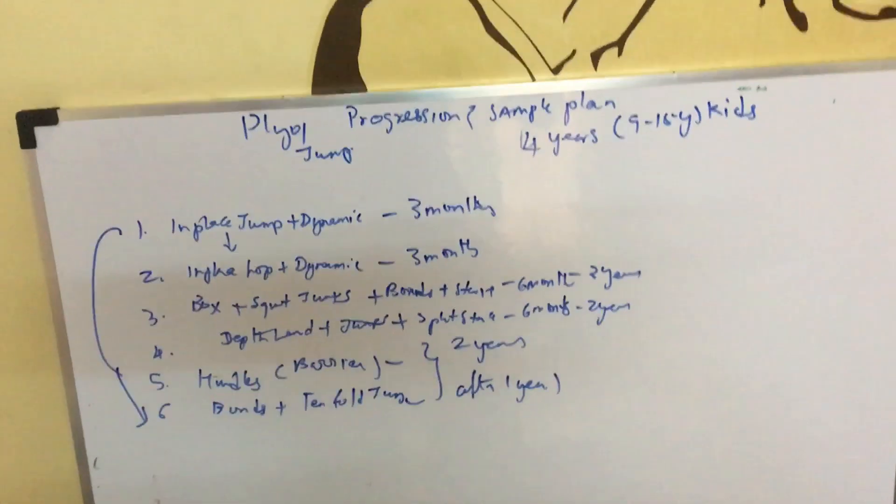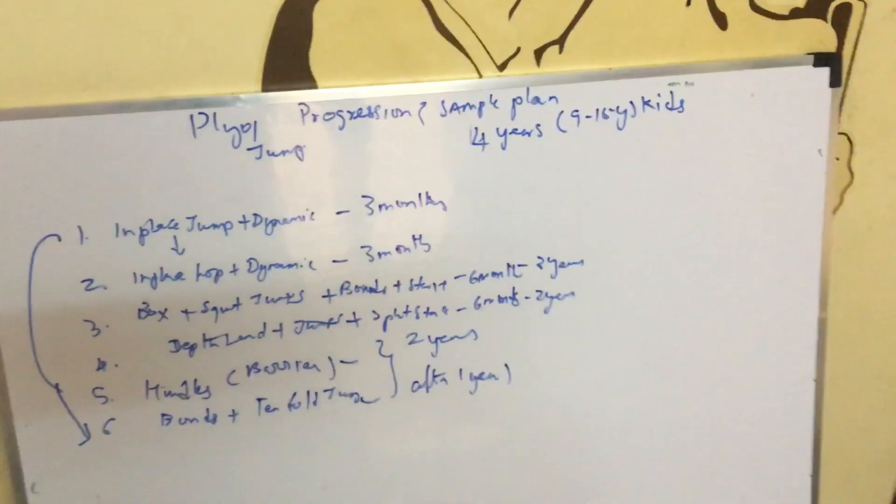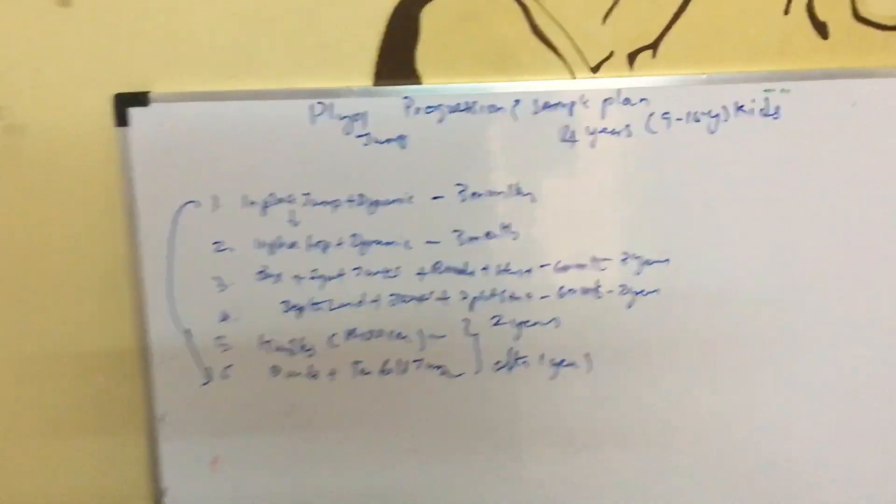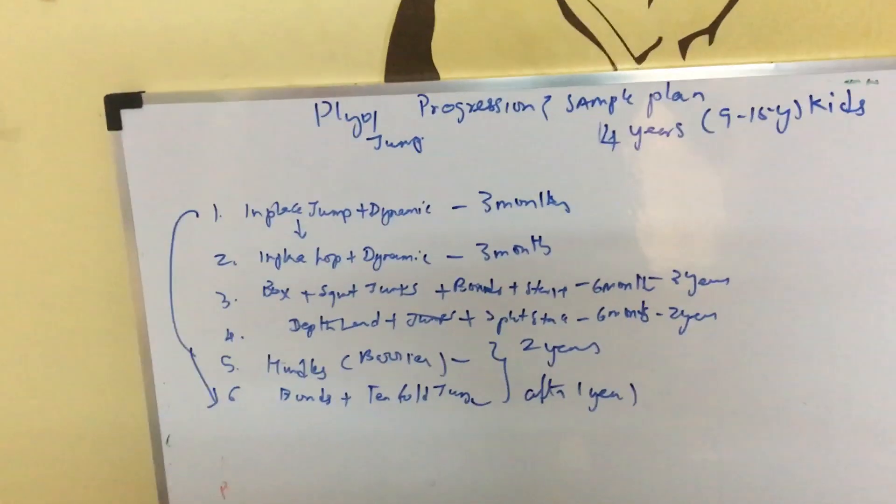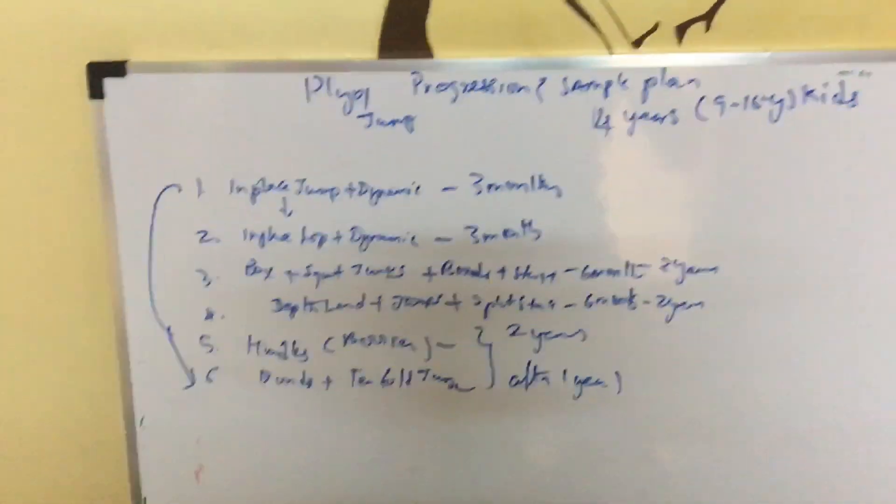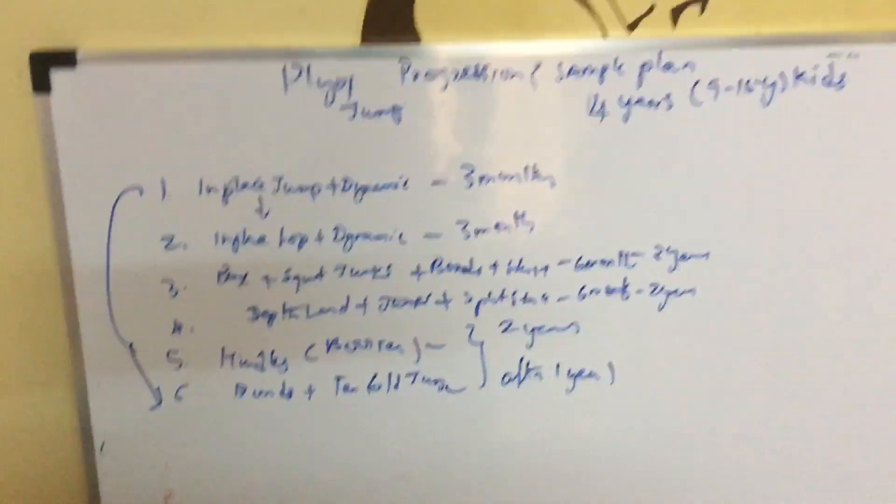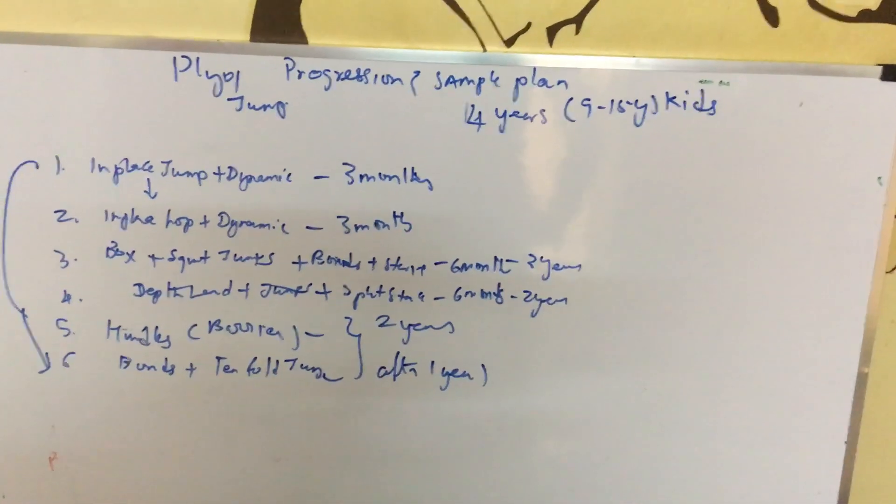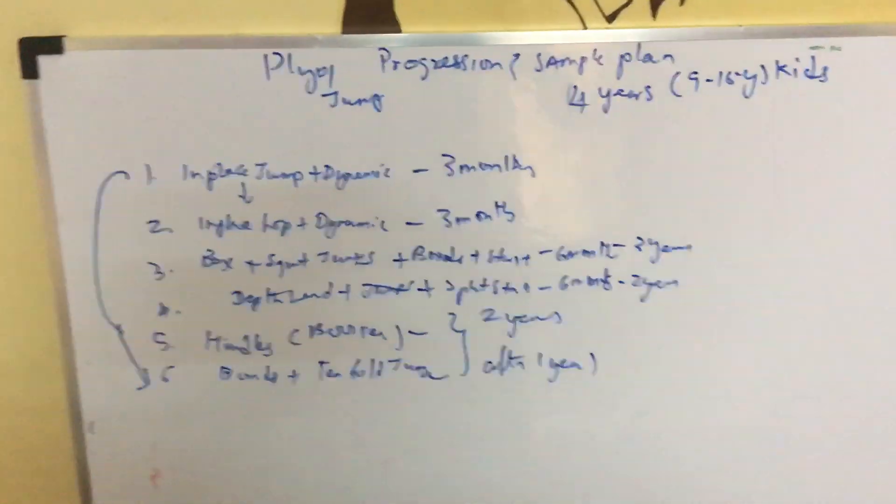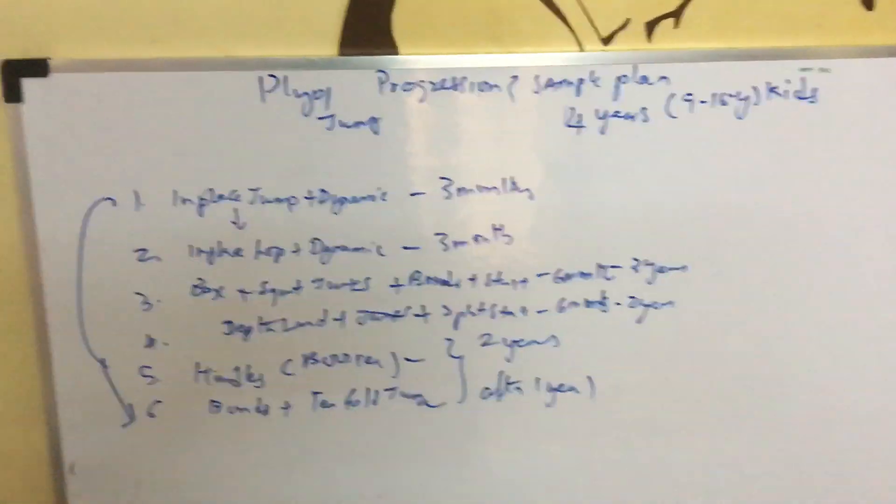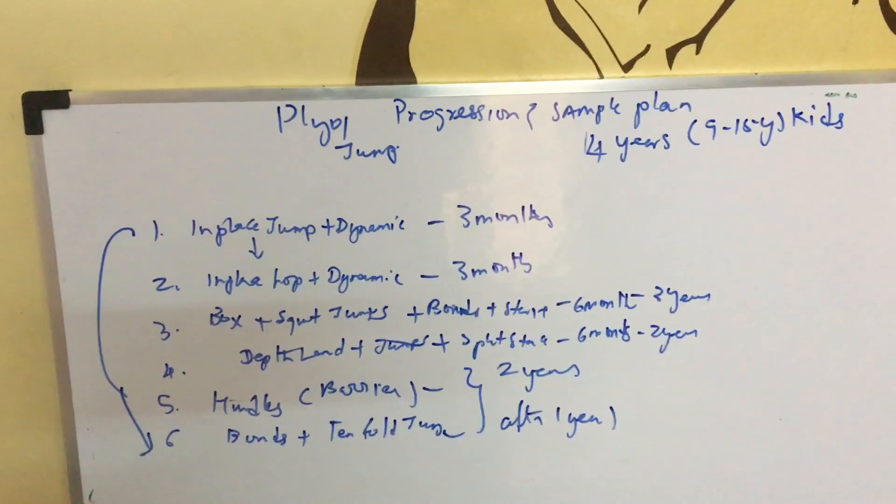In this video, I'm showing a progression and sample plan for long-term athletic development. Starting with the progression for in-place jumps and dynamic moving jumps, we begin with two sets of 10 seconds. This can be done every session and should be very extensive.